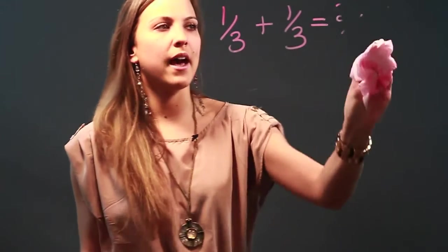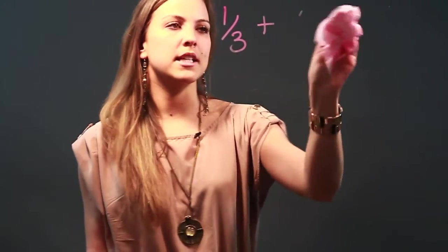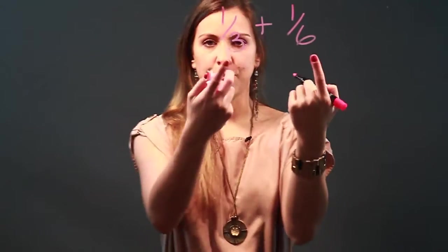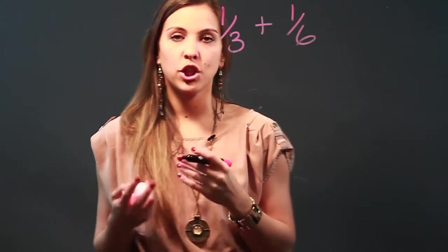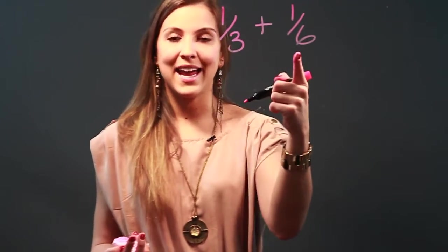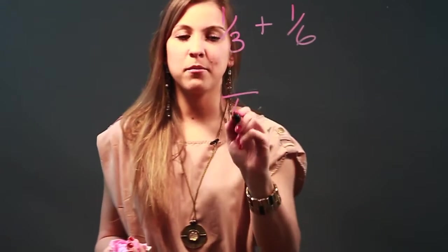So let's say we wanted to add 1 third plus 1 sixth. They're different. So what I need to do is think of the lowest common denominator, the lowest number that both 3 and 6 can go into. And that number is 6.